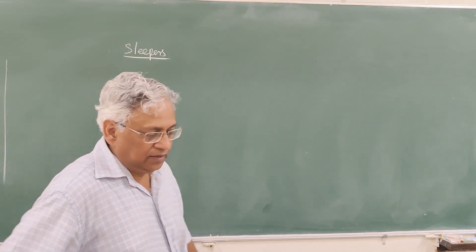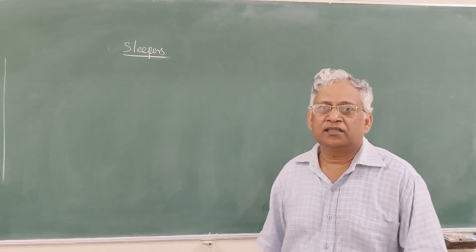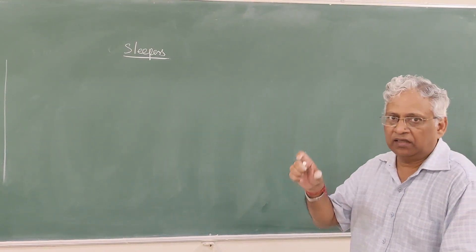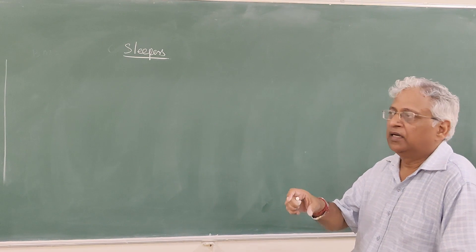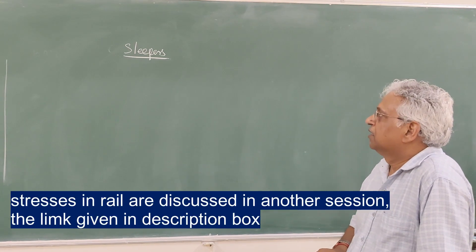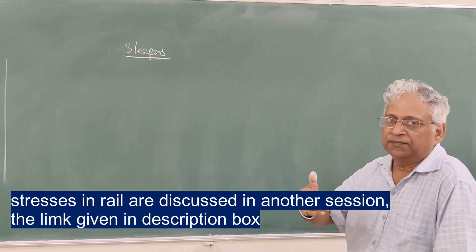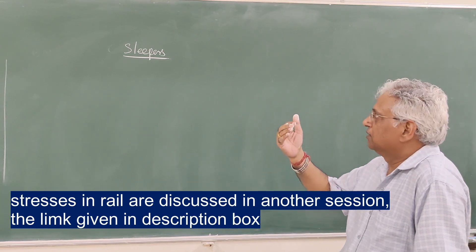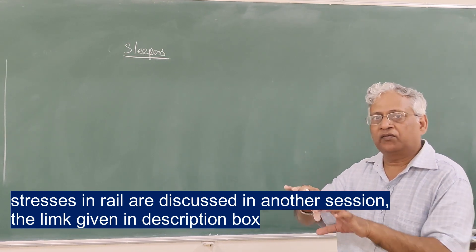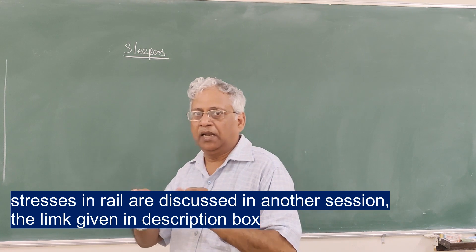Hello friends. In my last session I told you stress is in a rail due to various types of forces: vertical force, lateral force, longitudinal force, and contact stress. Today we will discuss how this load is transferred to the sleeper. From rail, the load is transferred to a number of sleepers and these sleepers are embedded in the ballast.